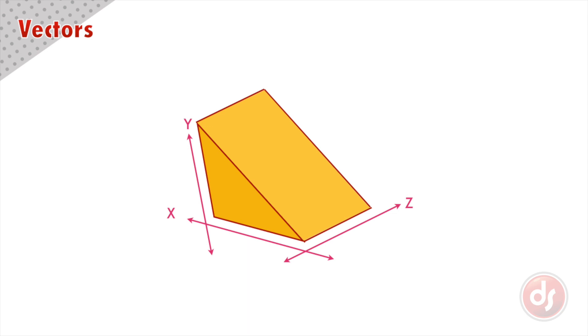Lines that do not travel directly on one of the line systems are called vectors. Another way to say this is if a line is at an angle to X, Y, or Z, it is called a vector.